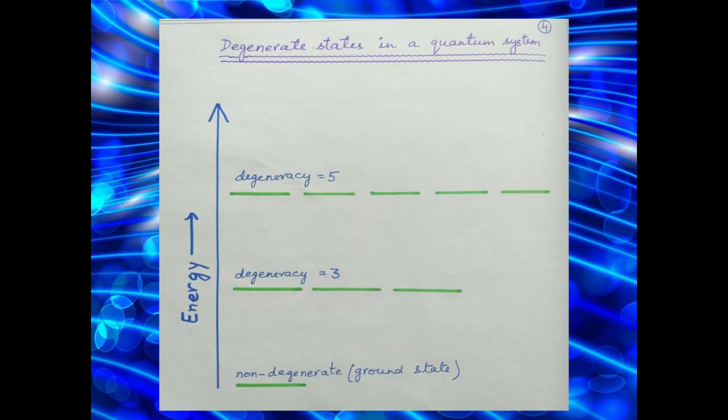For better understanding, you can see the diagram here which shows degenerate states in a quantum system. The ground state is non-degenerate, means there is a single energy state at that energy level. Then another state with energy level with 3 energy states is shown, it means its degeneracy is 3. Similarly, another energy level having degeneracy 5, that means it has 5 energy states which are equally probable to be filled by the particles.